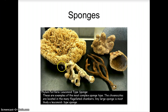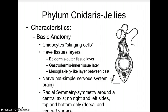Here's a picture of sponge spicules, and here we have some different types of sponges as you will see in lab. Our next phylum is phylum Cnidaria, which are the jellies.